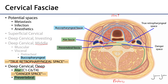If we go on the other side of the alar fascia — sandwiched between the alar fascia and the prevertebral fascia — we have the danger space. That danger space combined with the true retropharyngeal space together comprise the retropharyngeal space.